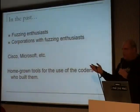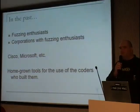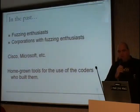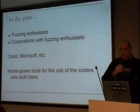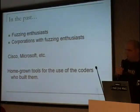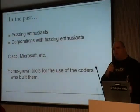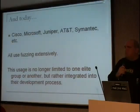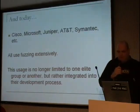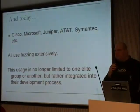In the past we had fuzzing enthusiasts — corporations with fuzzing enthusiasts, like Matthew Franz for Cisco. We had people at Microsoft, at Seaman Tech. But basically they developed their own fuzzing tools and used them in their own software security teams to find vulnerabilities once products were completed — they were not the actual development or QA team, they were lone wolves, they were hackers. Now Cisco, Microsoft, Juniper, AT&T, Symantec — they all use fuzzing extensively.